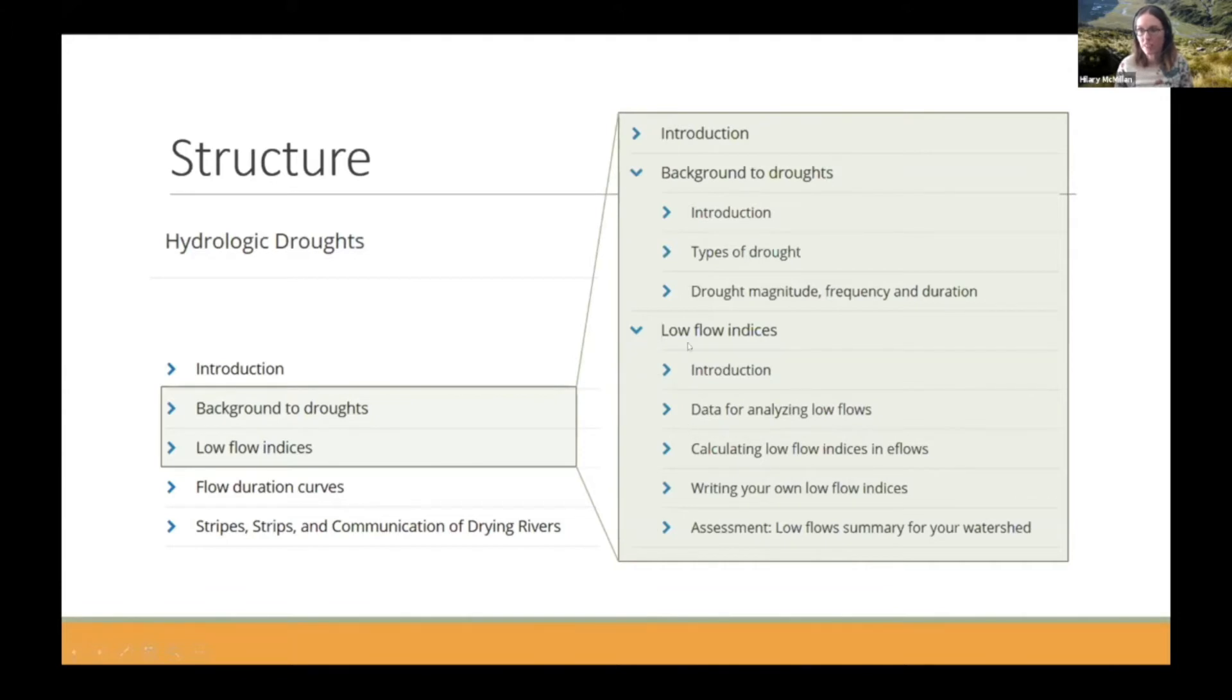So a low flow index is things like what's the number of days per year where the river was at a zero flow, something like that. So like a quantitative way of saying how low the river flows are.